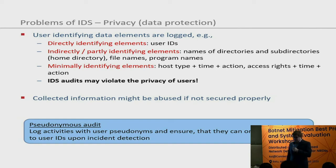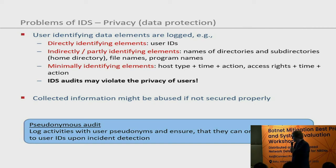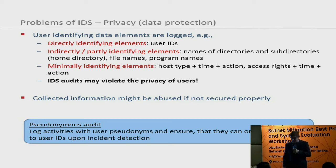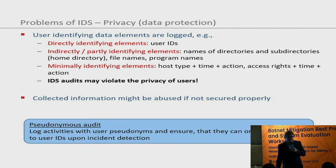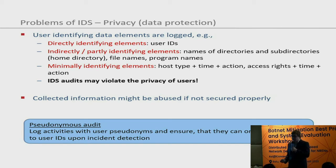This problem can be partly circumvented by pseudonymous audits — not logging actual user names but using pseudonyms to protect user privacy. The pseudonyms can only be mapped to real user IDs upon incident detection, so that during a normal review you do not see user names, but in the case of an actual event you can identify the right user and system.